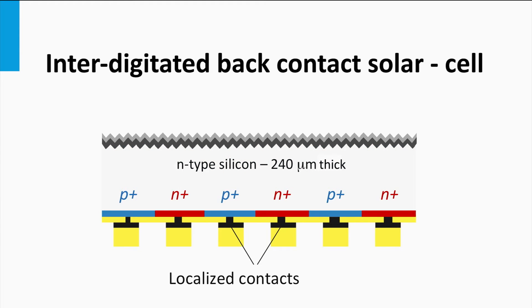An interdigitated back-contact is lacking one large P-N junction. Instead, the cell has many localized junctions. The holes are separated at a junction of P-plus and the N-type silicon, whereas the electrons are collected using an N-plus type silicon.